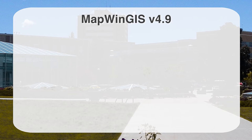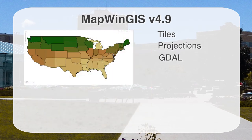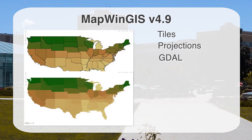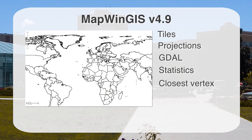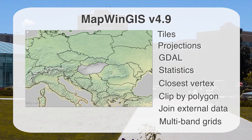The MapWin GIS ActiveX control version 4.9 included 68 new functions, mostly related to tiles and projections. Several new GDAL methods were implemented, such as adding overviews, rasterizing, and polygonizing. New spatial analytic methods include grid statistics for shapefiles, getting the closest vertex, getting related shapes, and clipping grids with polygons. We also added the capability to join external data using a table.join and support for multiband grid files.